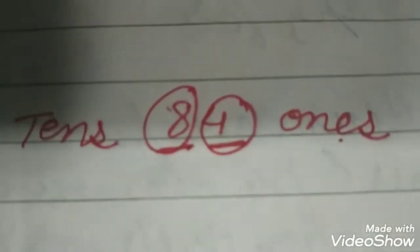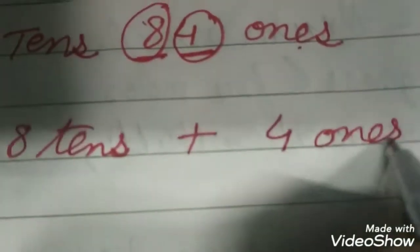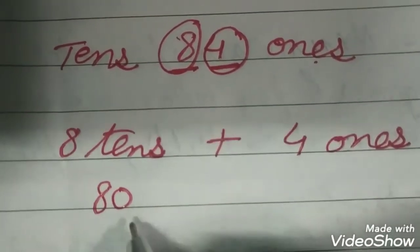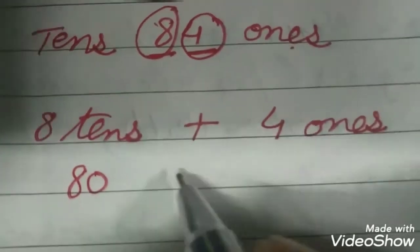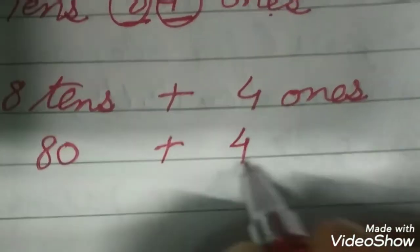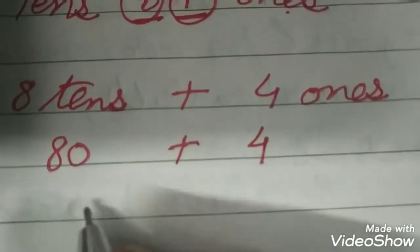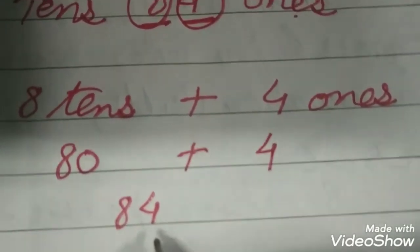So 84 ka matlab kya hai? We have 8 tens plus 4 ones. This can be written as 8 tens means 80, 8 tens means 80, and 4 ones means 4 only. 80 plus 4, aur jab hum isko plus karte hain, the answer is 84. Zero ki jagah ye 4 aa jayega. Yahan par the answer becomes 84, jo hamara number tha.